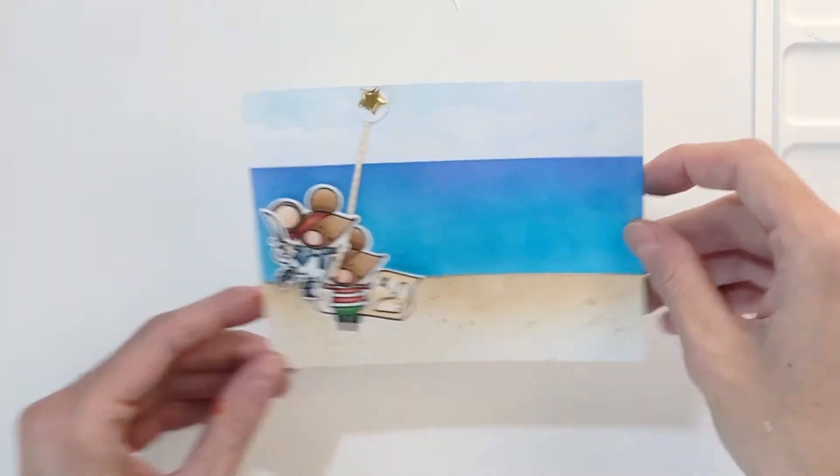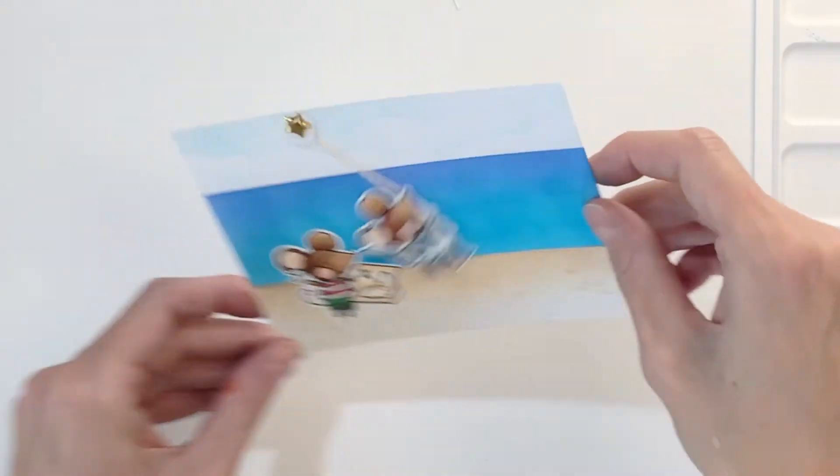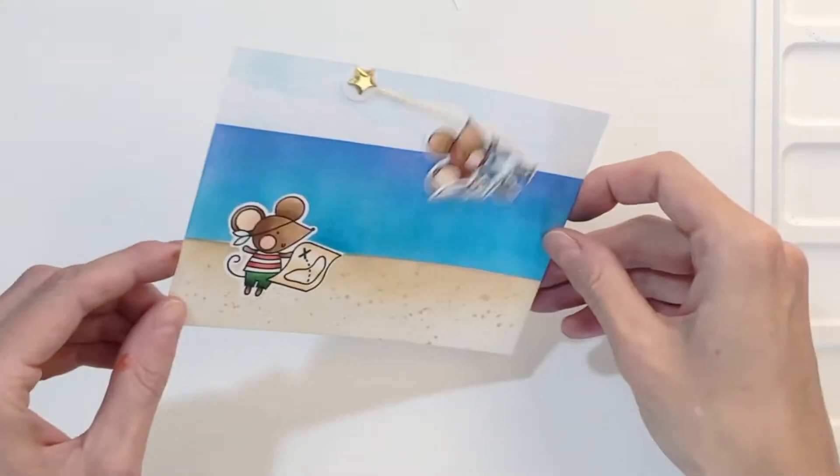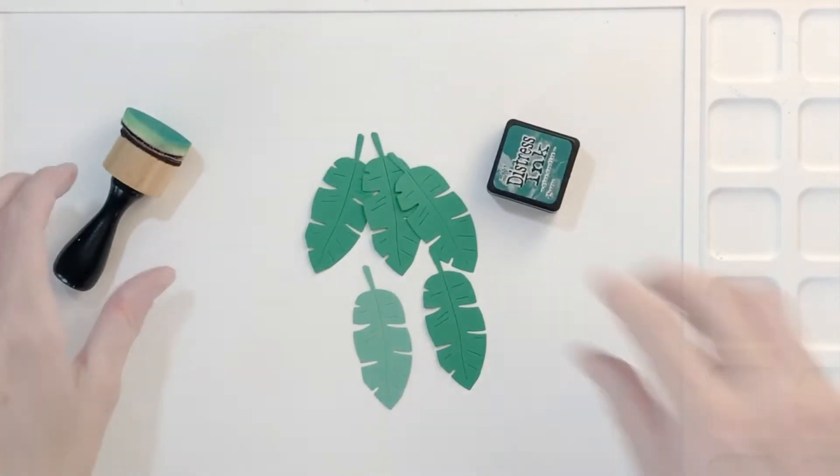Now you can really see why that background mouse couldn't have just been die cut and stuck down, because that little dimension of cardstock would have prevented the swinging mouse from swinging.